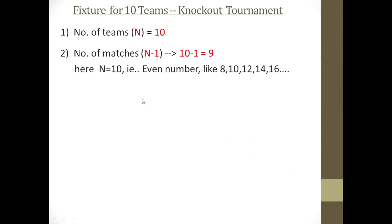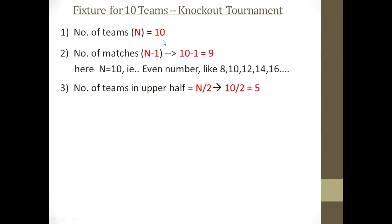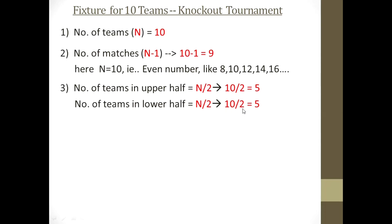Here n = 10, which is an even number — like 8, 10, 12, 14, 16. Sometimes n may be an odd number like 7, 9, 11, 13, 15, and there are different formulas for even and odd numbers. The teams should be divided into two halves. The formula for the upper half is n/2, that is 10/2 = 5. The same formula applies for the lower half: n/2 = 5. So 5 teams in the upper half and 5 teams in the lower half.